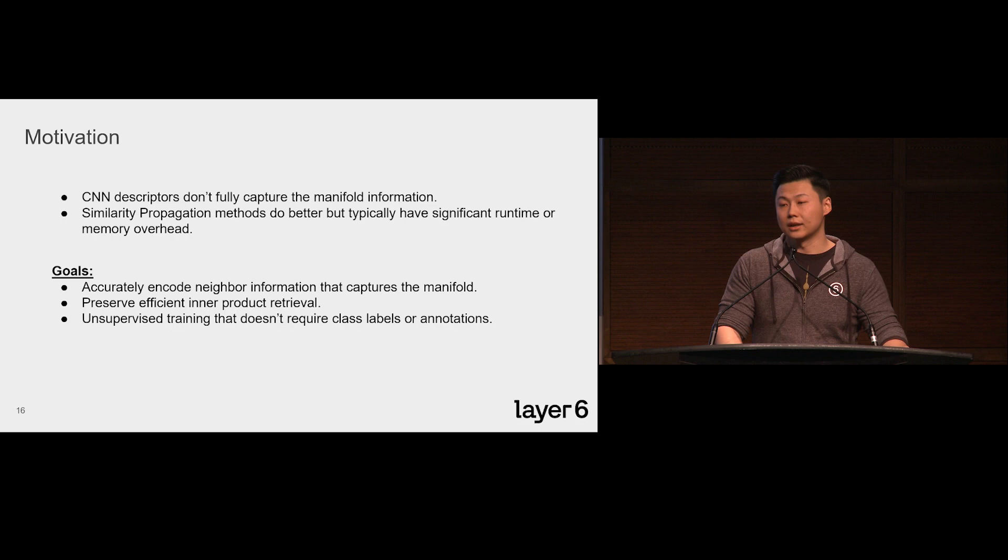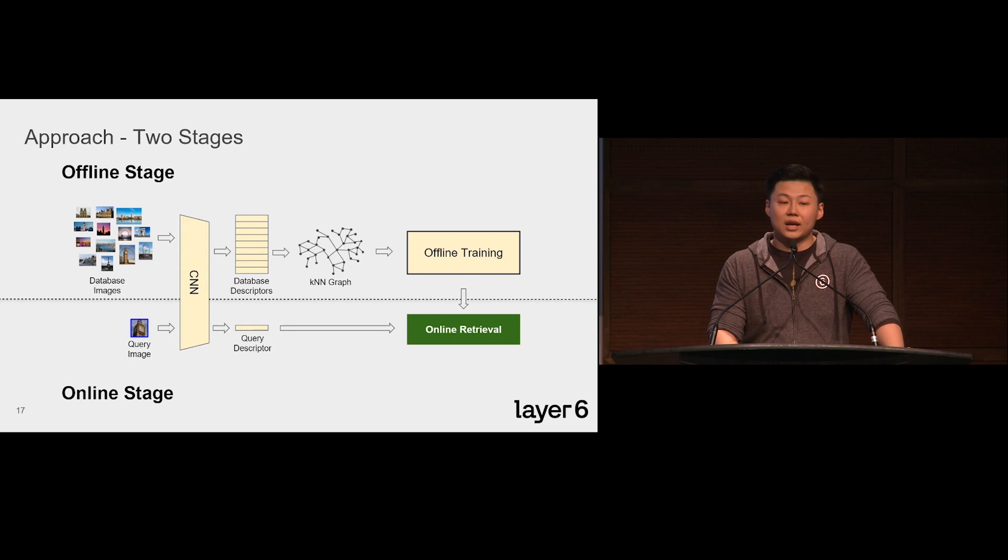Our goal here is to design a model that can encode data manifold information into a new descriptor space and preserve the efficient inner product retrieval. Since labeling images for retrieval problems is extremely expensive, so here we only focus on unsupervised training. In image retrieval, the offline stage is where only database images are processed. We try to make all expensive operations like graph construction and network training happen in this stage, so that in the online stage when a new query comes in, the retrieval and the inference can be done efficiently.